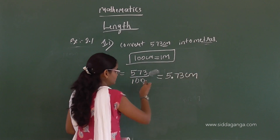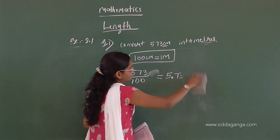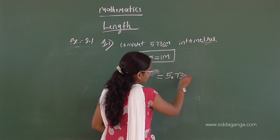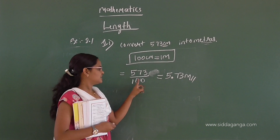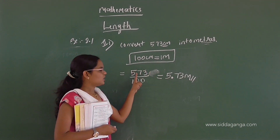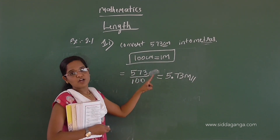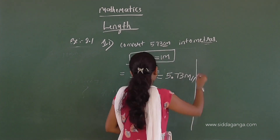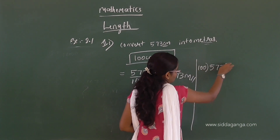The denominator has 2 zeros. For example, with one zero you move the decimal one number from the right side. With two zeros, move two numbers from the right. So the answer is 5.73 meters. This is a division: 573 divided by 100 equals 5.73.